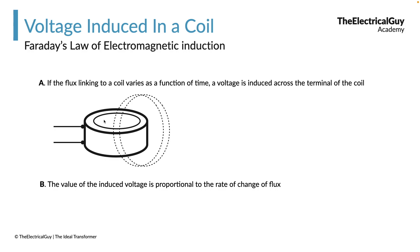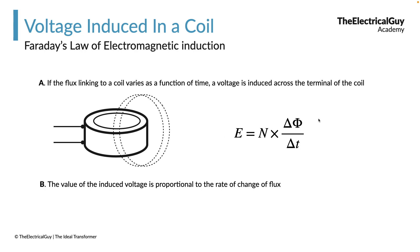So Faraday's law simply says: if the flux linking to a coil varies as a function of time, a voltage is induced across the coil, and the value of the induced voltage is proportional to the rate of change of flux. We also have a mathematical representation: e = N × (Δφ/Δt), where e is the voltage induced across the terminal of the coil, N is the number of turns, and Δφ/Δt is the rate of change of flux with respect to time.